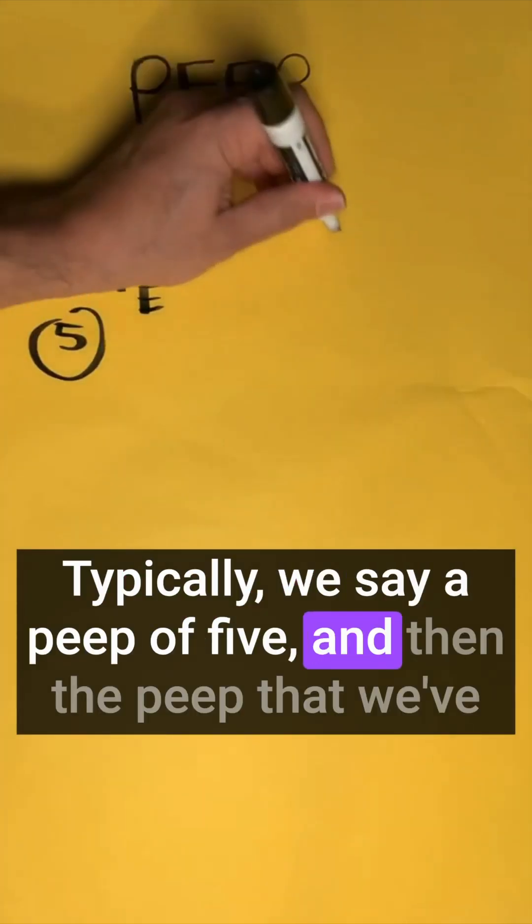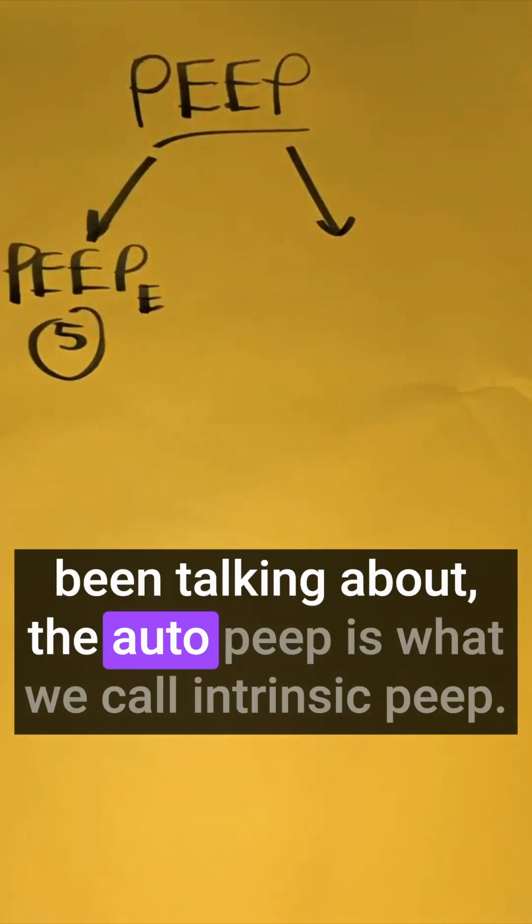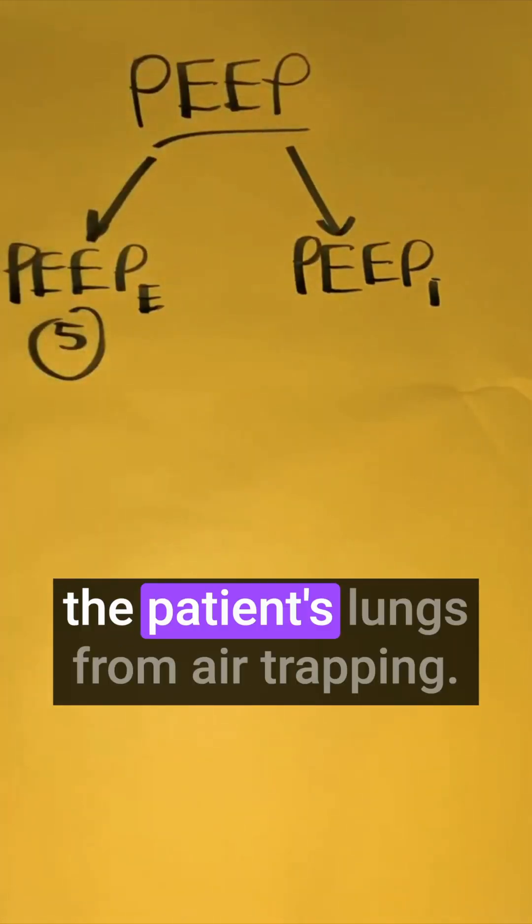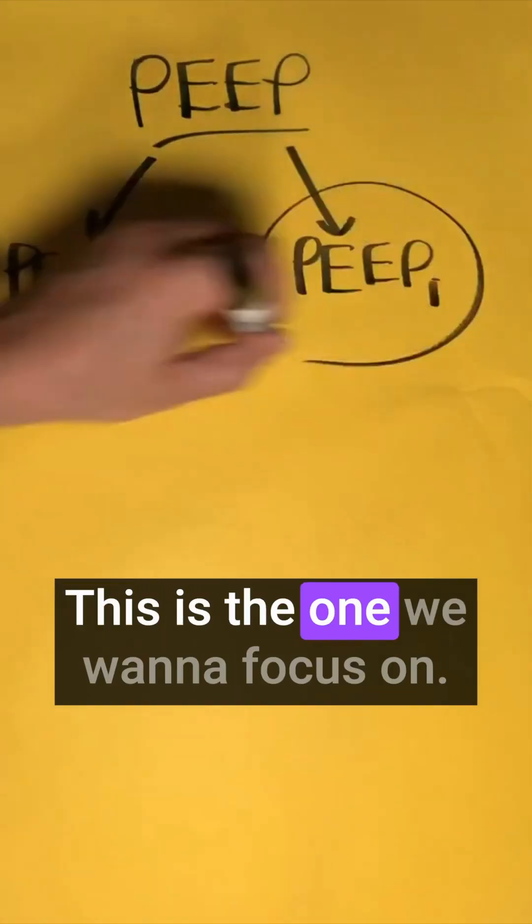Typically, we say a PEEP of five. And then the PEEP that we've been talking about, the auto PEEP, is what we call intrinsic PEEP. That's PEEP generated within the patient's lungs from air trapping. This is the one we want to focus on.